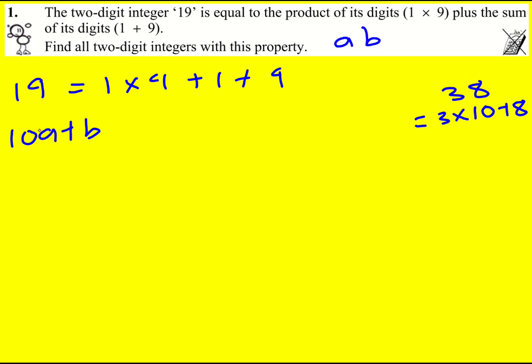So I've got 10A plus B, and we're saying that is equal to the product of the digits. So that's going to be AB plus A plus B. Brilliant.